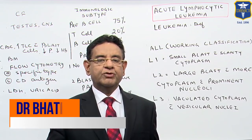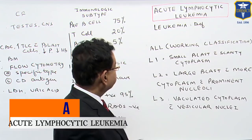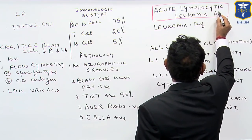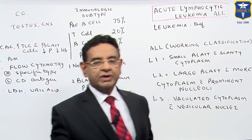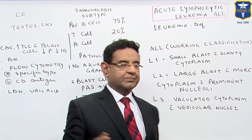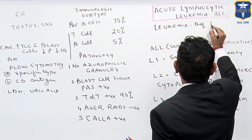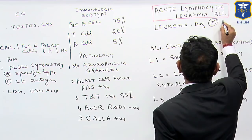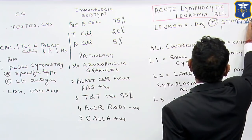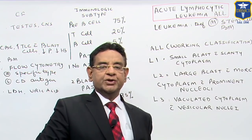Hello friends. Now I will be talking to you about acute lymphocytic leukemia, so called ALL. But before I discuss about ALL, let us see what is leukemia. When we talk about leukemia, any leukemia, as per definition, this is the malignant transformation of the stem cells in the bone marrow — that is any leukemia.